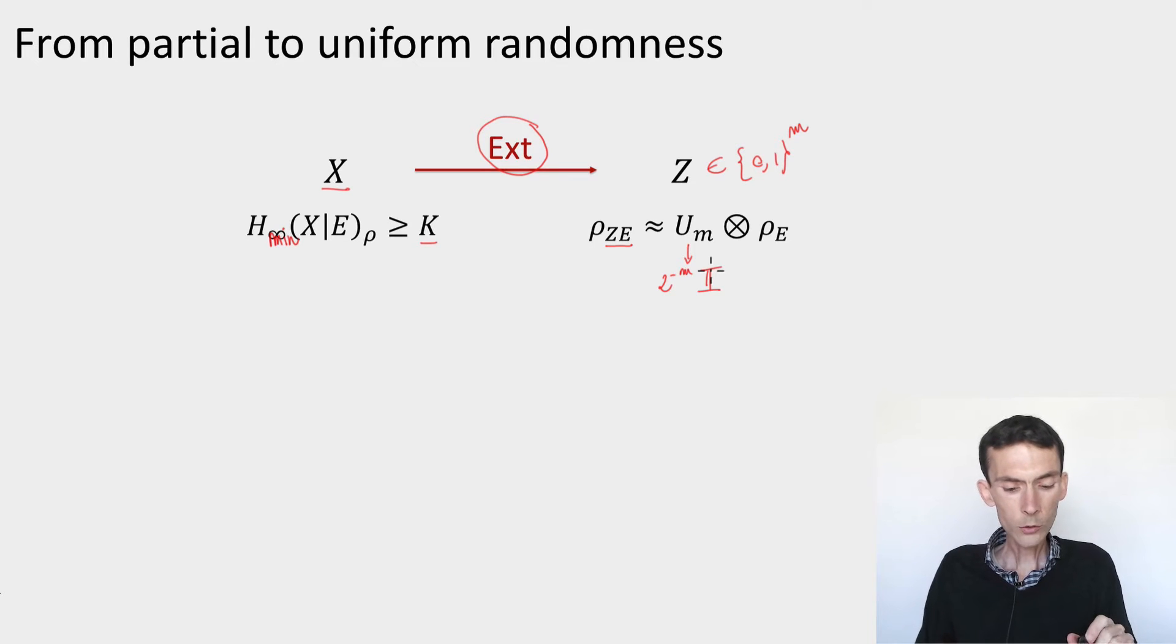And we already saw in the context of privacy amplification that we're not going to be able to achieve this using a deterministic procedure. Because if you take X to be a deterministic function, then it's always possible to set things up so that the side information E is very small, meaning that X has large min entropy conditioned on the side information. But still it is the case that this side information happens to contain just one important bit about Z.